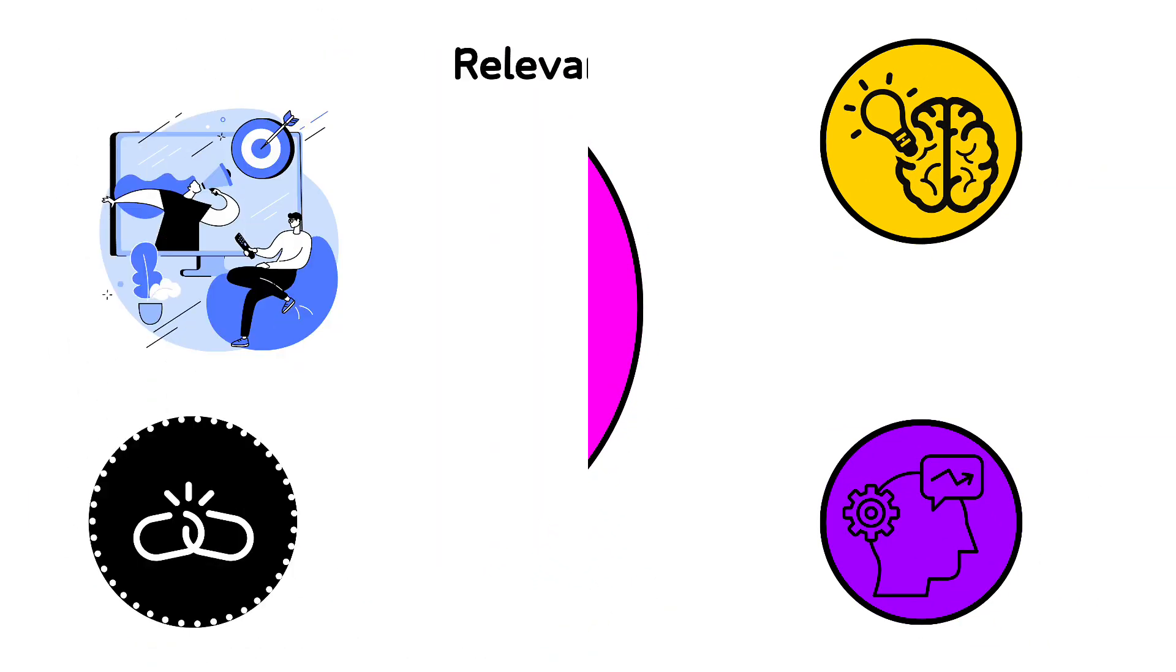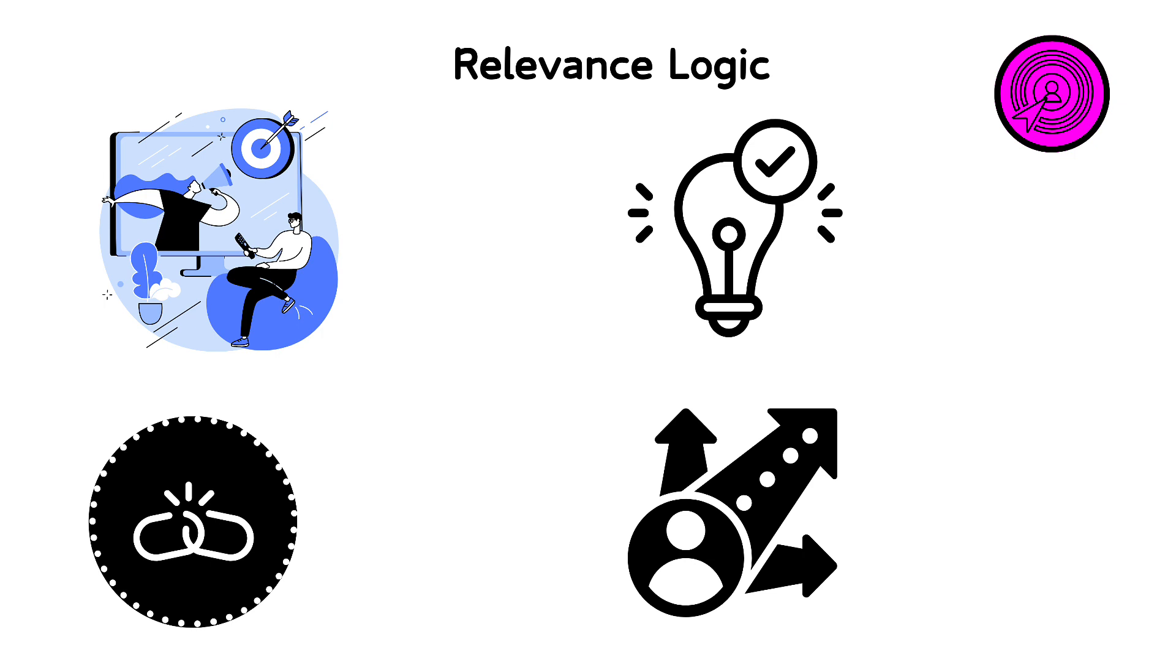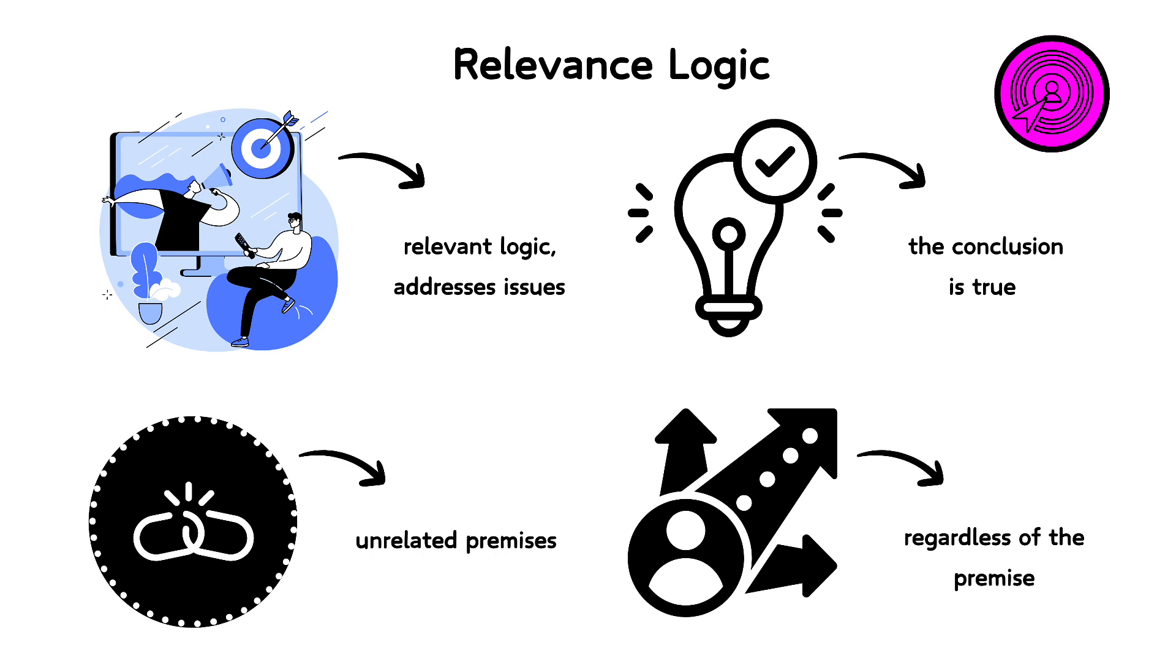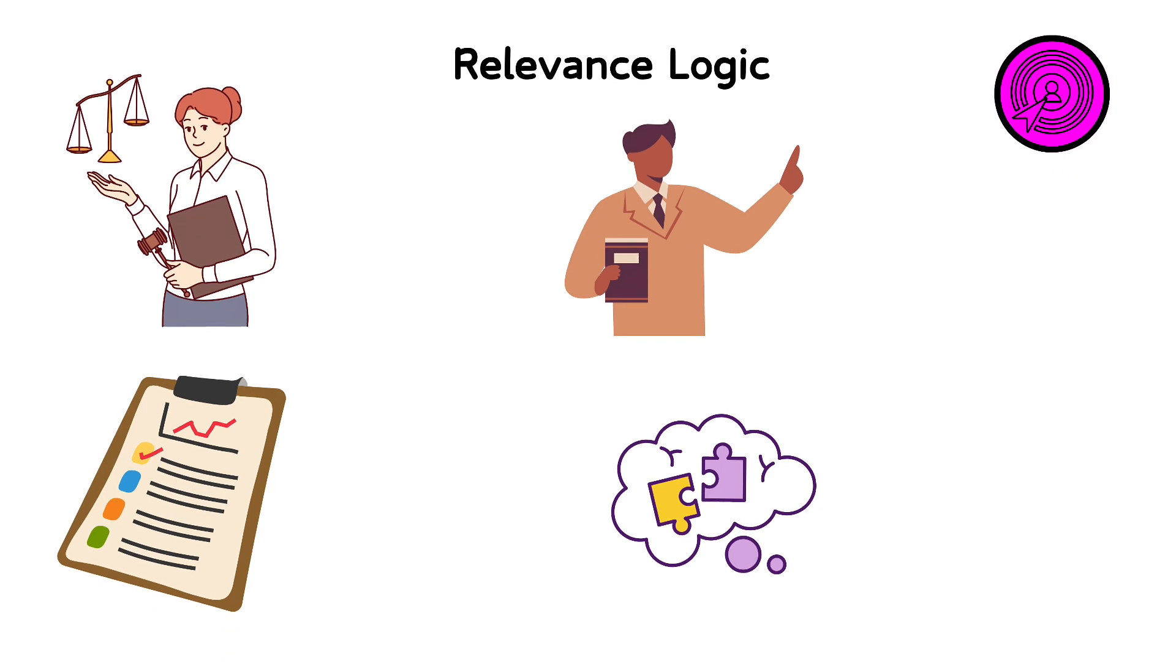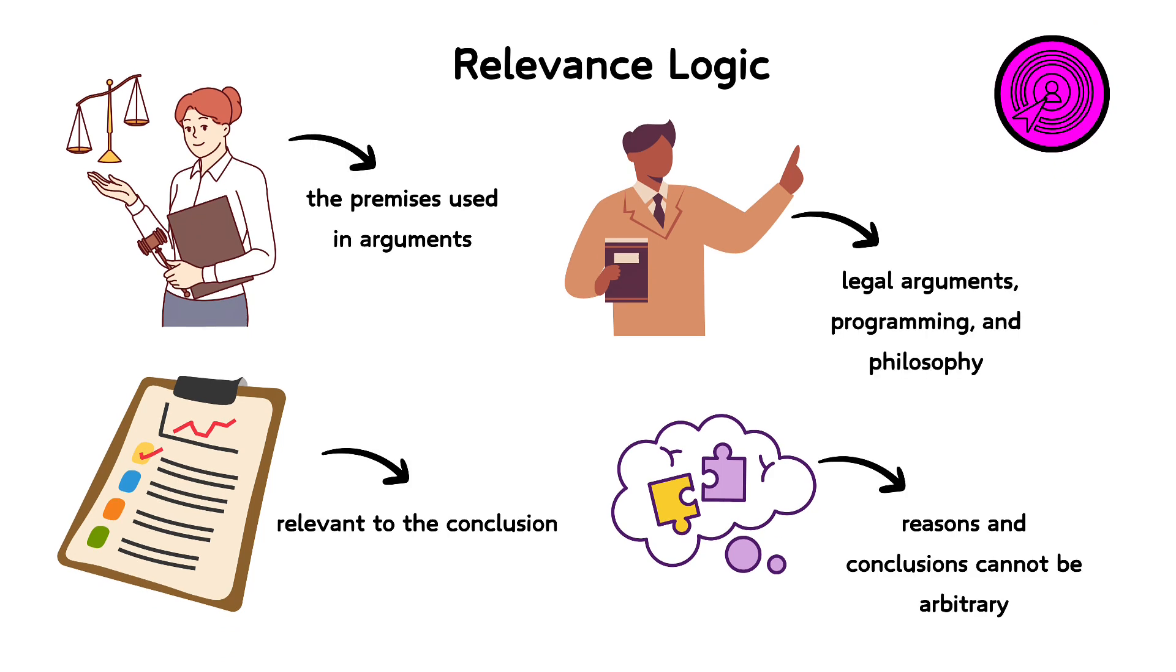Relevance logic, also known as relevant logic, addresses issues with classical logic where inferences can be made from unrelated premises. For example, in classical logic, the statement if the moon is made of green cheese, then 2 plus 2 equals 4 is technically true because the conclusion is true regardless of the premise. Relevance logic seeks to ensure that the premises used in arguments are actually relevant to the conclusion. This type of logic is important in legal arguments, programming, and philosophy where the connection between reasons and conclusions cannot be arbitrary.